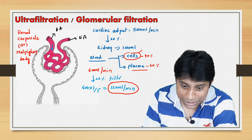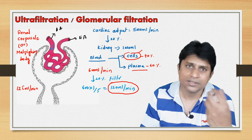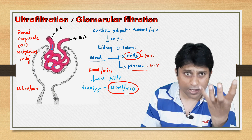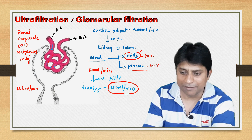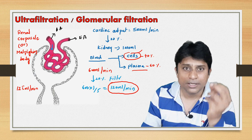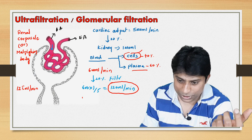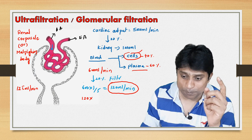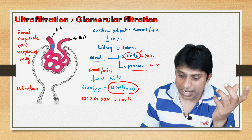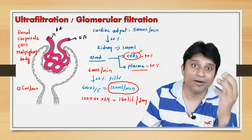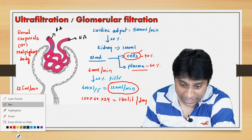In your NCERT, it is mentioned as 125 milliliters per minute. If the cardiac output is around 6000 milliliters or the glomerular filtrate input is around 1100 to 1200 ml, then you can get 125 milliliters. For a simple calculation, 120 milliliters per minute is the filtration rate. If you calculate per day — 120 per minute into 60 minutes into 24 hours — it gives 180 liters of glomerular filtrate formed per day.